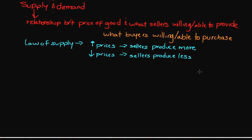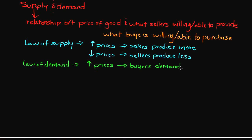Now if sellers had it their way, they would only provide something at the highest prices. But we also have to consider the law of demand. Where the law of supply describes a direct relationship between price and quantity supplied, the law of demand is an inverse relationship — meaning as one increases, the other goes in the opposite direction. As the price increases, the quantity that buyers will demand actually decreases. And on the flip side, as prices decrease, buyers will demand more of something.